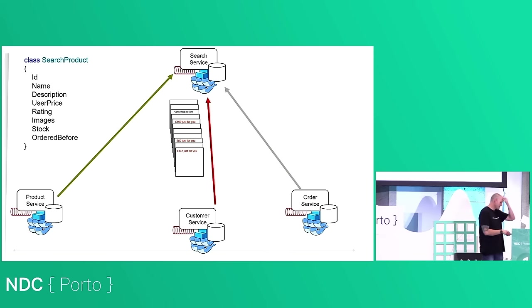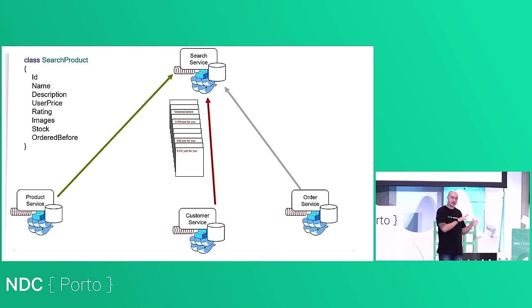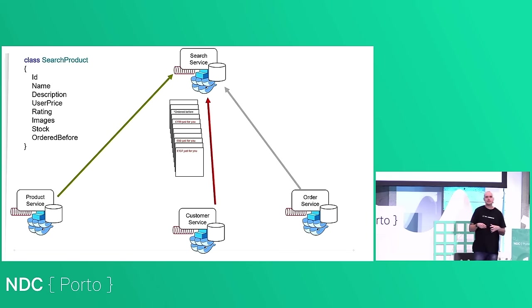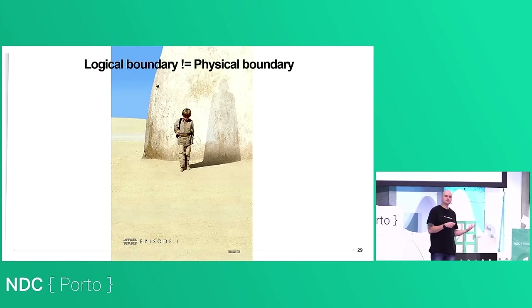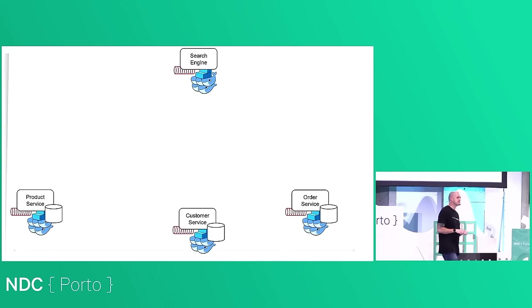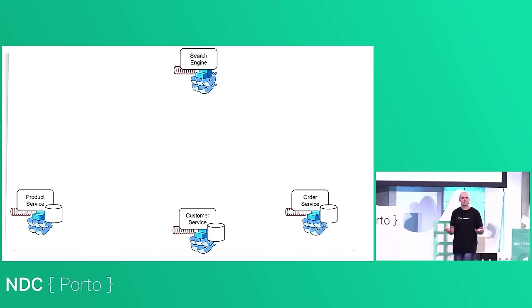We can fix this with a technique called the engine pattern. We replace our search service with a search engine — which exposes three interfaces: iFindProducts, which takes a filter and returns a list of products; iPriceProducts, which gives a price for a product for a specific user; and iTrackOrders, which returns true or false if someone has ordered something before. The search engine compiles these interfaces into an assembly and puts it on a local NuGet feed or internal package manager.